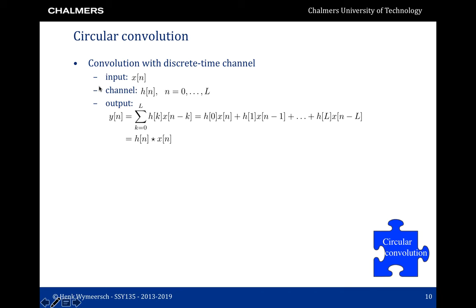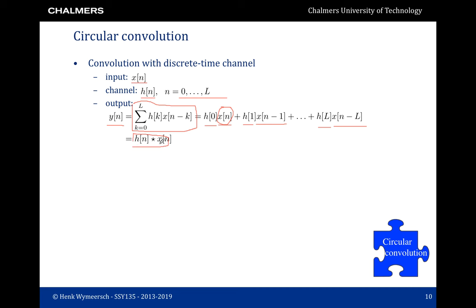Let's start with circular convolution. First we have traditional convolution, where we have an input sequence x, the channel h with L+1 taps, leading to an output sequence y_n, where the output at time n is given by x_n times h_0 plus x_{n-1} times h_1 up to x_{n-L} times h_L. So the output at time n depends on x_n plus previous inputs. This is generally written as h_n convolved with x_n — though I recommend not using this notation because it seems to indicate a memoryless operation.